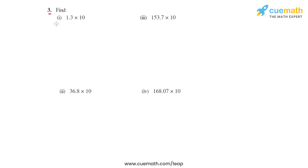To start with, we have the first bit wherein we have 1.3 times 10. There is one zero, so the decimal will move one place towards the right, and our answer for the first bit comes as 13.